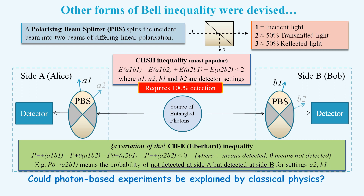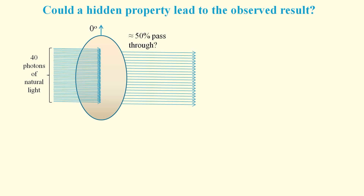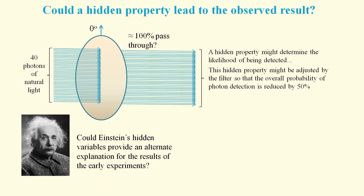But could the observed violations of this inequality be explained by classical physics? If 40 photons enter a polarizing filter, then the natural assumption is that only half of them pass through. But one possible way we could make use of Einstein's hidden variables would be to suggest that all photons might actually pass through, and then a hidden property would cause just half of them to be detected. Can a model using this approach produce the observed results?